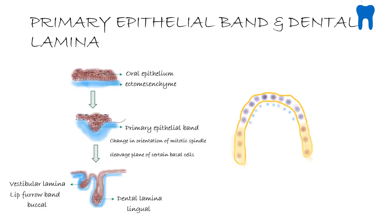Let us now see the formation of the primary epithelial band and the dental lamina. This is the oral epithelium and this is the underlying ecto-mesenchyme. Two to three weeks after the rupture of the buccopharyngeal membrane, that is by around the 6th week of intrauterine life, the oral epithelium will form a horseshoe-shaped epithelial thickening called the primary epithelial band. More than the proliferation of cells, the reason for this horseshoe-shaped thickening is a change in the orientation of the mitotic spindle and the cleavage planes of certain basal cells.